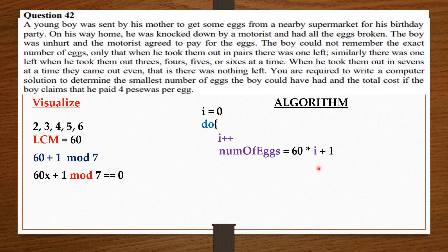Then I say, while you should do this, you should keep increasing i by 1. You should keep computing for the number of eggs while the number of eggs modulo 7 is not 0. So, you should keep doing the computations. If the number of eggs modulo 7 is not 0, you should keep doing it.